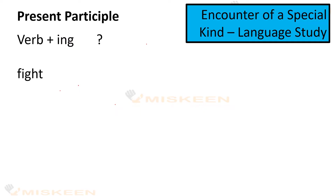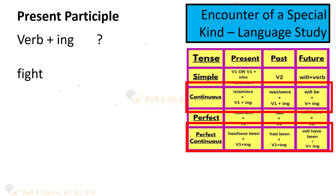Present participle ko hume 'ni encounter of a special kind' ki language study section mein cover kiya hai. Short mein dekta hai: present participle ka ishtamal hootahe continuous tenses mein. V aur ing ka joh kombination hai, woh hume dheta hai present participle.